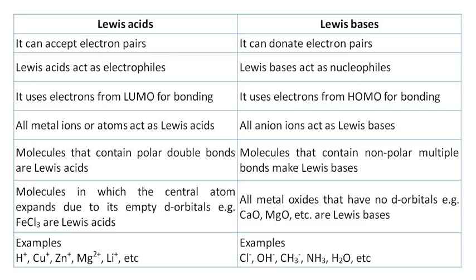All metal ions or atoms act as Lewis acids, but all anion ions act as Lewis bases. Molecules that contain polar double bonds are Lewis acids, while molecules that contain non-polar multiple bonds act as Lewis bases.